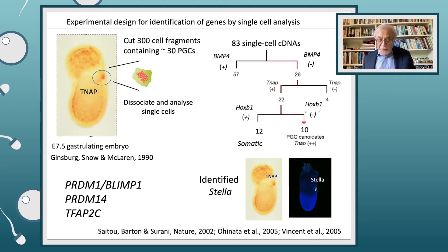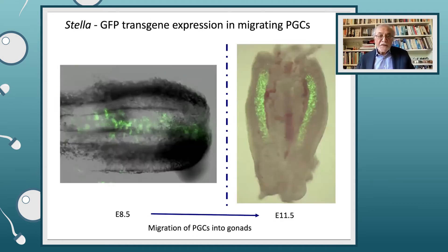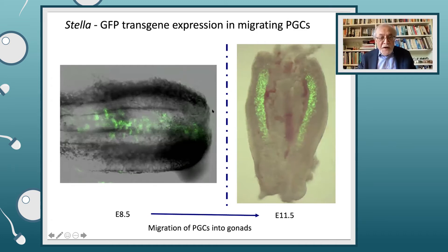This actually opened up the whole field of mammalian germ cell biology. For example, you can now use these markers, these reporter genes, to track the migration of germ cells from early development to the developing gonads.